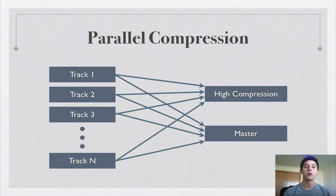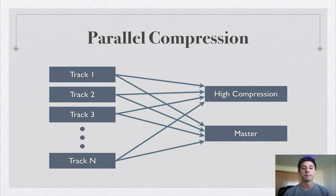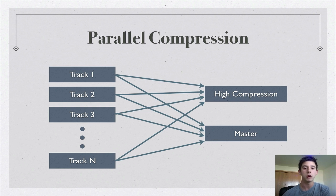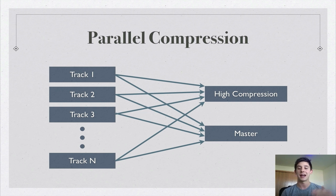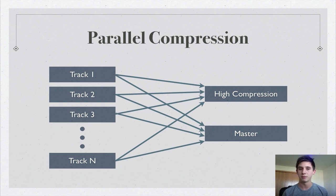So that's what's going on. Now if we look at parallel compression, we have a high compression channel and a master channel which has no compression on it. This is what parallel compression is. If you don't know what's going on here, I do have a video in Logic Pro 9 — it still applies, so go check that out. The synopsis is you are mixing this highly compressed channel with the master channel, bringing out some of the subtleties in the tracks that you are parallel compressing, and also making it a little bit thicker.